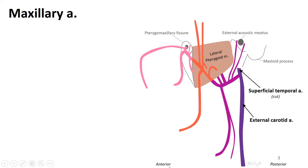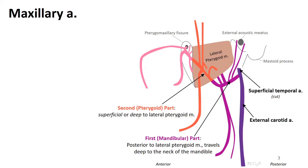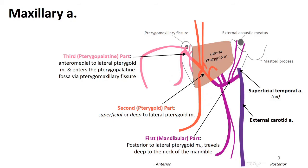The maxillary artery has quite a few branches, so we break it down into three specific parts. The first part, or mandibular part, passes behind or deep to the neck of the mandible, which is lateral to the lateral pterygoid muscle — our boundary between the three parts. The second or pterygoid part is either superficial or deep to the lateral pterygoid muscle. The third part is medial or anterior to the lateral pterygoid muscle, and its branches are mostly within the pterygopalatine fossa. Notably, the first and third parts have branches that all traverse foramina, whereas the second part has none that do.